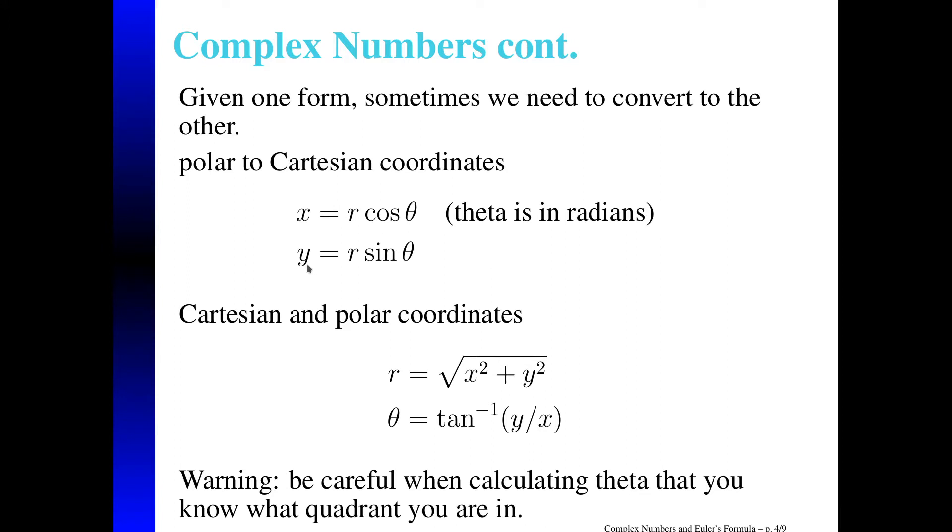And if I happen to have X and Y, because it's in Cartesian coordinates, I can represent it in polar coordinates by calculating the length of the hypotenuse this way, and calculating theta as the arc tangent of the ratio of Y over X. Now, when you do this, you're probably going to plug it in your calculator and just write down the number it gave you, but you need to be careful that you know what quadrant the vector is in. So let's see why.